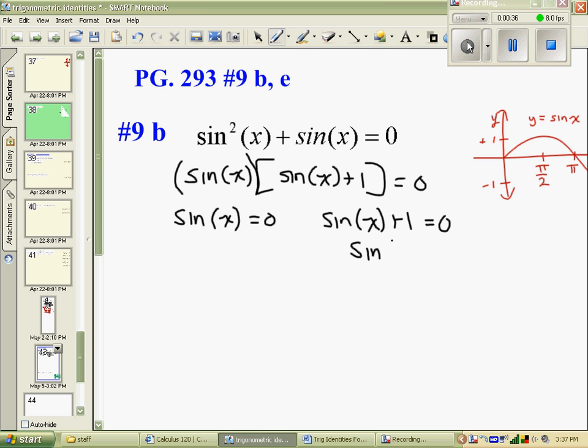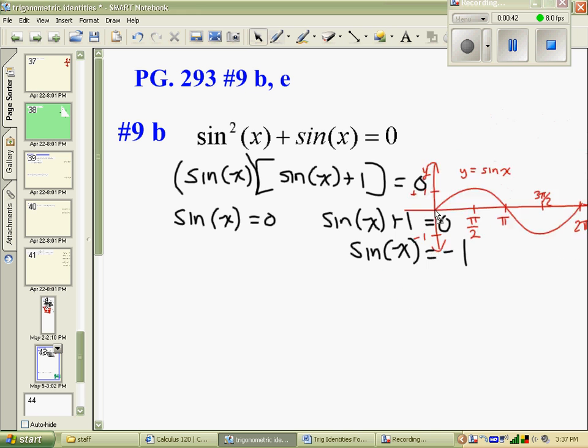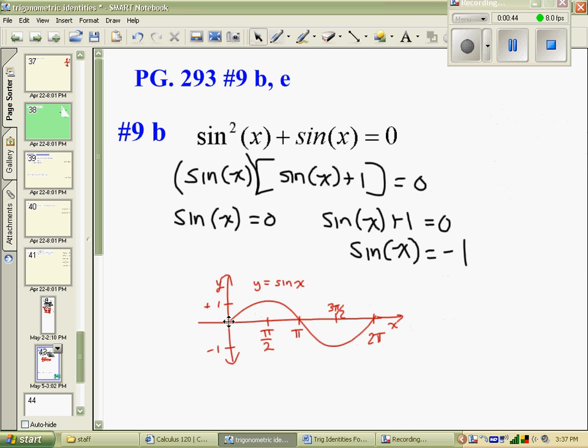This means that we are looking for where is sine of x equal to negative 1, and where is sine of x equal to 0. So we critically examine our function of y equals sine x, and we see that in red it is at 0 here, at 0, and at π.